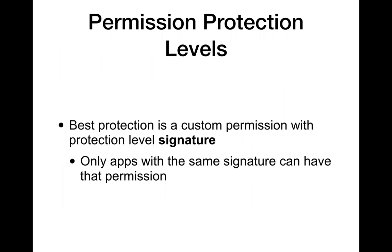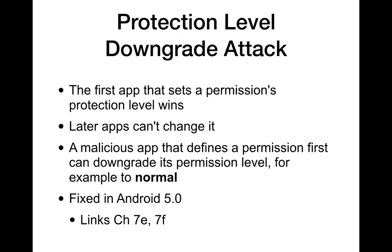If you define a new permission, you want to make it 'signature' — meaning only apps signed with the same key can use it, so only your company's apps can use that new permission. This is a fun downgrade attack: before Android 4, the first app that defined a permission would set the security level, and a later app trying to define the same permission would inherit the old security level. So you could put on a malicious app that defines the Twitter permission first, and when the real Twitter app is installed, it will have the old permission setting — tricking it into making permissions available to everyone.